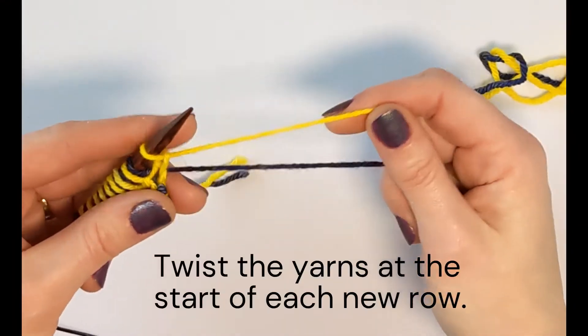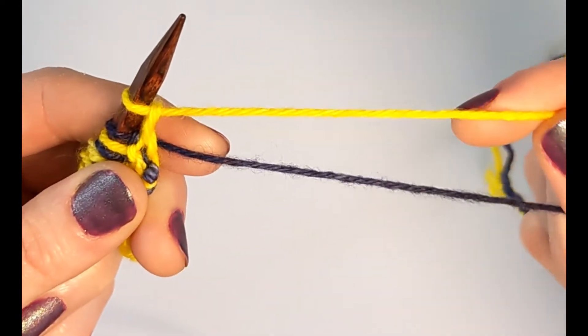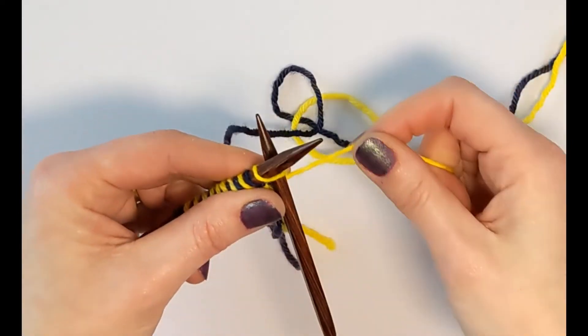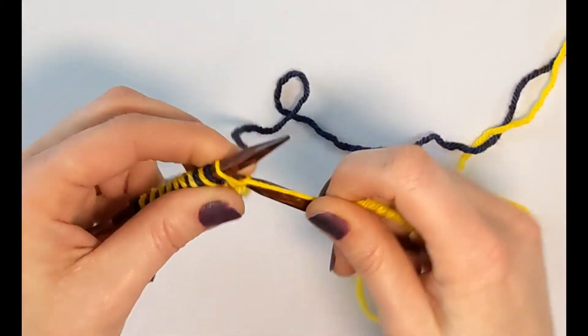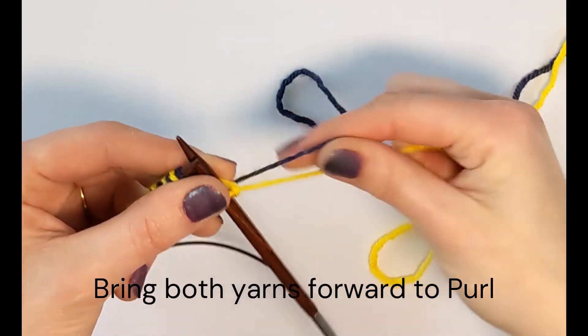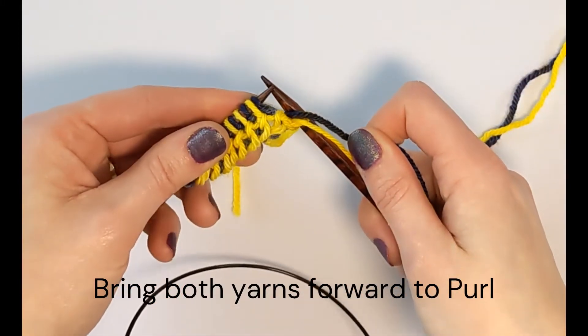As we go into the second row, twist your yarns to keep the edge closed. Here, I'll knit with the yellow, I'll bring both yarns forward, and I'll purl with the blue. This is the opposite of the row before.